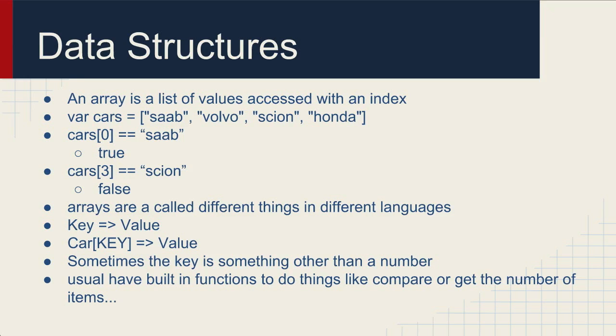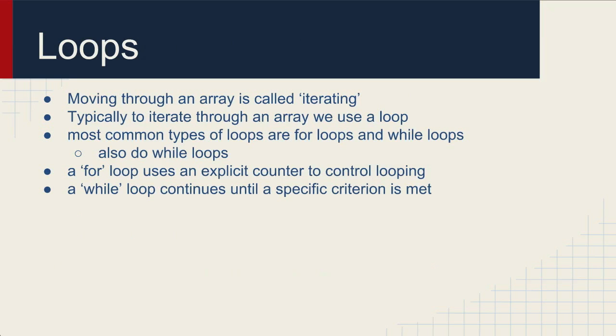What if you have a giant list, say of every car sold in March in California, and you want to go through each item in that list? That would take forever, right? Well that's why we have loops. Loops allow us to move through arrays and other pieces of data or perform actions repeatedly. Moving through an array is typically called iterating. To go through an array is to iterate through the array. Typically to iterate through an array we use a loop.